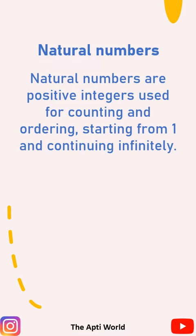Before going ahead, let's first understand what natural numbers are. Natural numbers are positive integers used for counting and ordering, starting from 1 and continuing infinitely. Say 1, 2, 3 and goes to infinity.